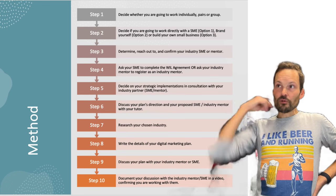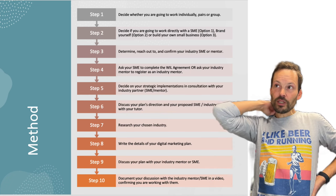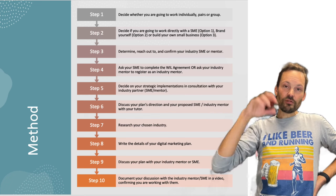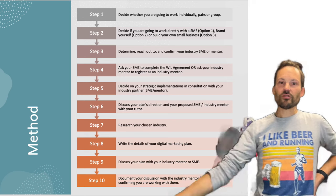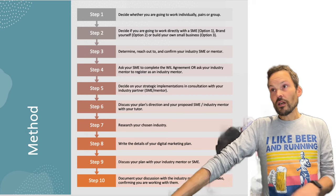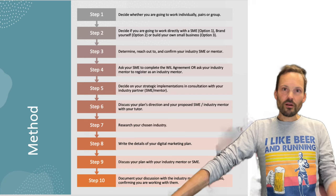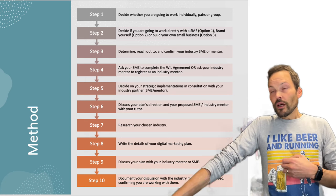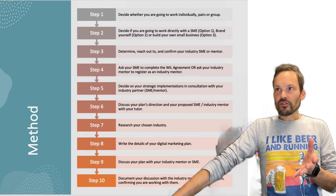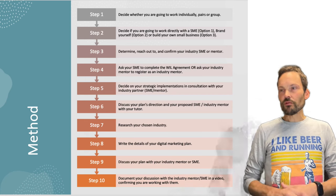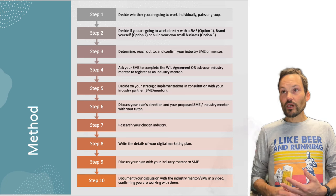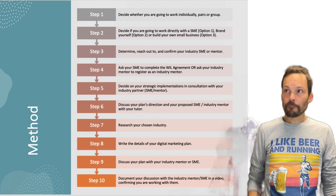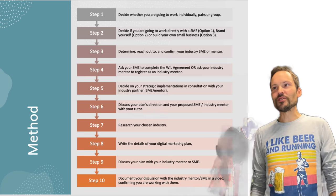Ask them to complete the WIL agreement, or ask your mentor to register as an industry mentor — there are pages on Canvas for that. Make sure they are registered with RMIT so we know you've confirmed that relationship. Then decide on the strategic implementations you want to do with your SME or industry mentor, come to class, and discuss your plan and proposal directions with your tutor.